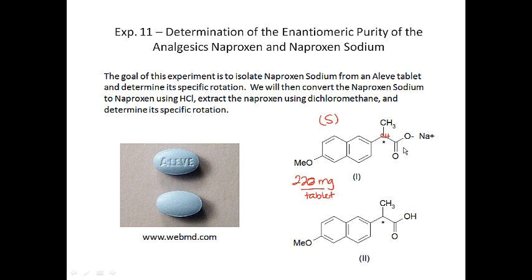Naproxen sodium is simply the carboxylic acid deprotonated — it's the sodium salt — which is why we call it naproxen sodium. The S-enantiomer is all that should be found in the Aleve tablet, and its specific rotation is reported as minus 11 degrees.